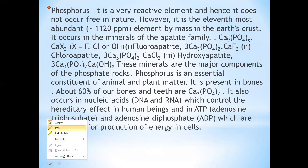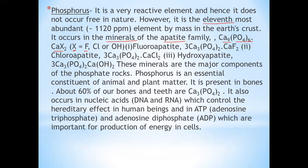Elements of the nitrogen family, that is group 15 elements, are nitrogen (symbol N), phosphorus (symbol P), arsenic (AS), antimony (SB), bismuth (BI). Collectively, the group 15 elements are known as pnictogens, meaning suffocation.